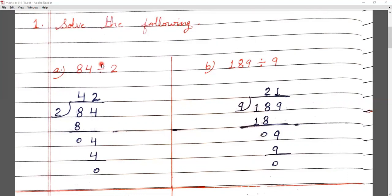After 8, our next digit is 4. We bring 4 down. We look in the 2 times table — 2 twos are 4. We write 4 below and subtract. Remainder is 0. So the answer to 84 divided by 2 is 42.